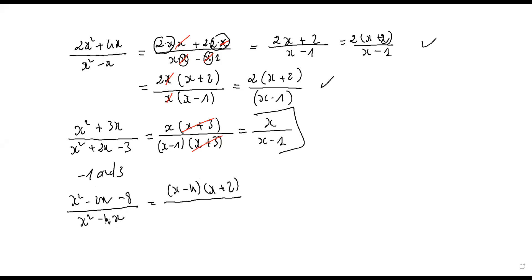For the denominator, factorize by x — it would be x times x minus four. Now we find the common factor x minus four, top and bottom. Cancel x minus four, and the answer is x plus two over x.